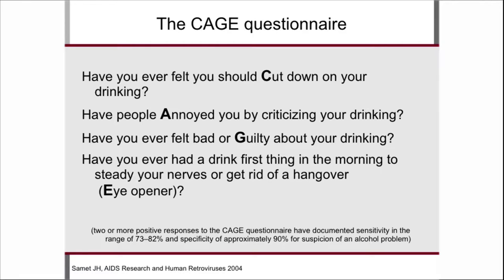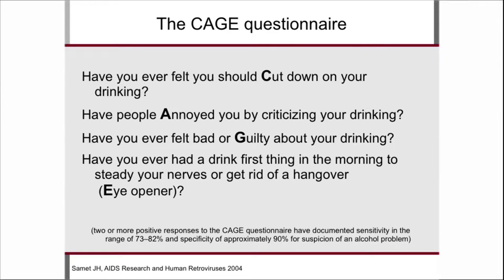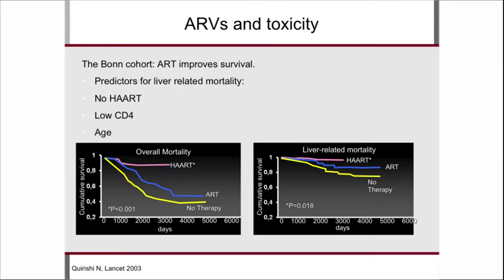One questionnaire, the CAGE questionnaire — C-A-G-E — has been validated in HIV infection. It's just four questions to help the primary care physician rule out if there might be an alcohol problem: Have you ever felt you should cut down your drinking? Have people annoyed you by criticizing your drinking? Have you ever felt bad or guilty about your drinking? Have you ever had a drink first thing in the morning to steady your nerves? If you have two or more positive answers, you're at high risk of having an alcohol problem.